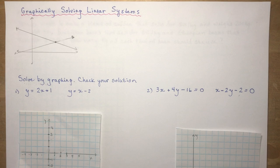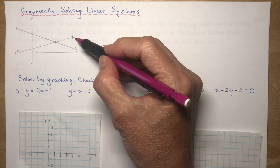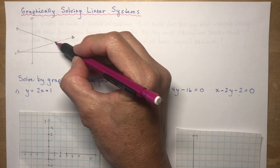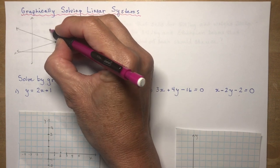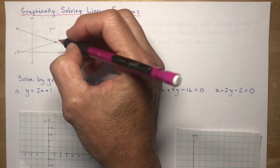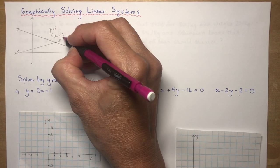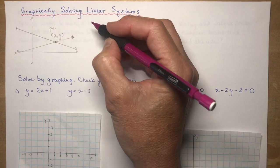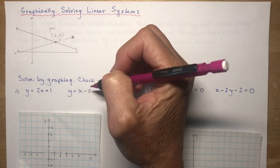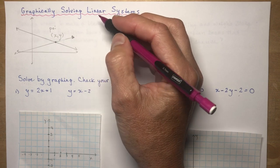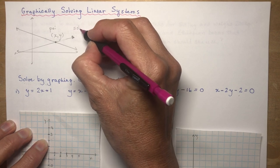The first thing you need to know is what does it mean to solve a linear system, and what is a linear system? A linear system just means that you have two lines and you're trying to find the point of intersection — sometimes abbreviated POI. A point of intersection has X and Y coordinates, so you have to find both the X and the Y value to say exactly what the solution is.